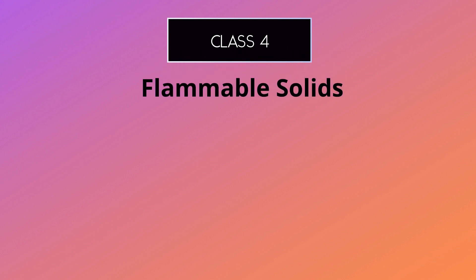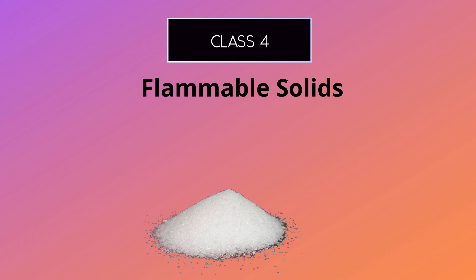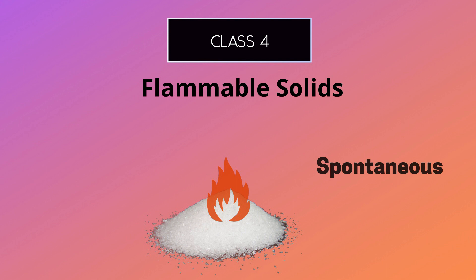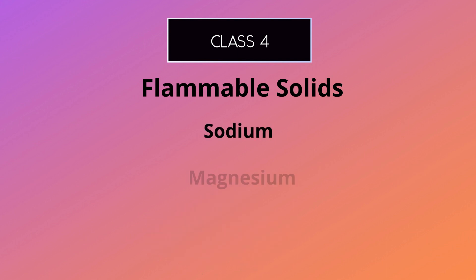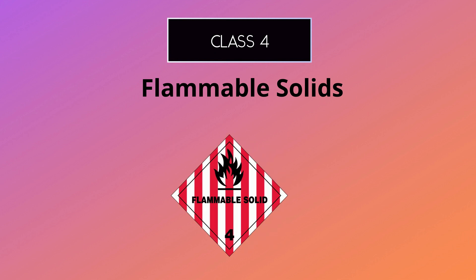The fourth class of dangerous goods is flammable solids. This class includes materials that are solid at normal conditions of temperature and pressure and that can ignite easily. This class also includes materials that are spontaneously combustible or that can become dangerous when they come into contact with water — for example, sodium, magnesium, and potassium. The symbol for flammable solids is a flame over a square with number four.